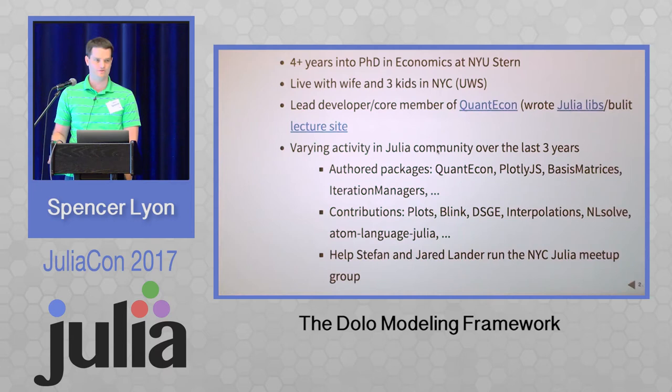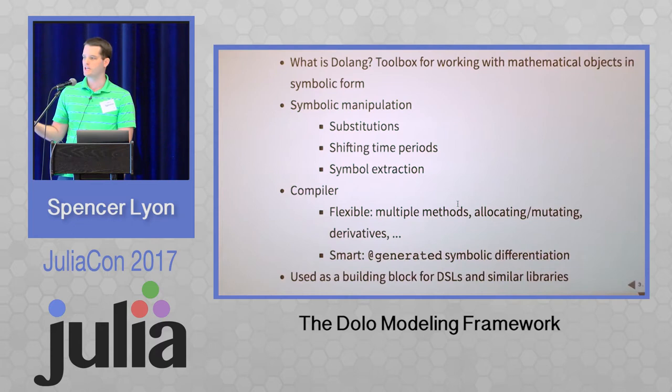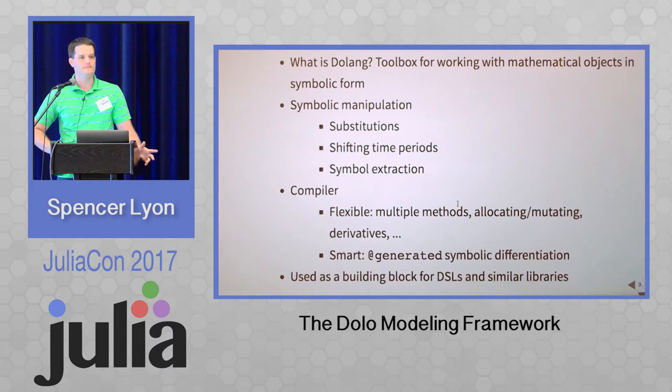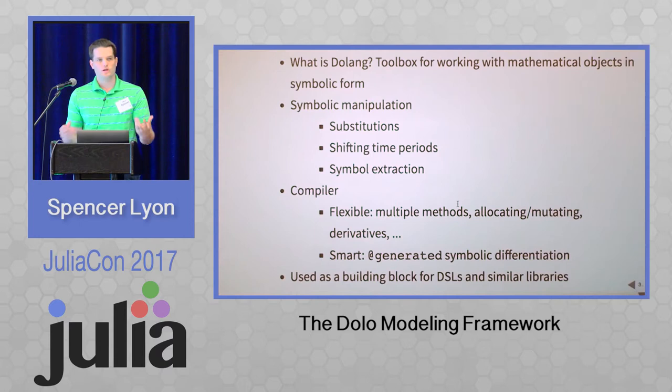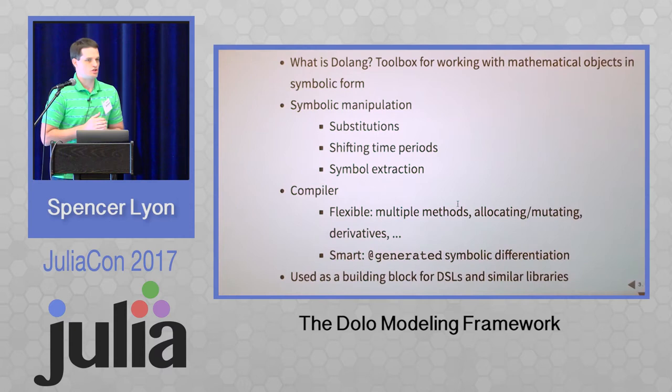Let's jump into the first package: DoLang. I describe it as a toolbox for working with mathematical objects in symbolic form. It's split into two main components. First, a set of underlying functions that manipulate mathematical expressions — things like substituting out a particular subexpression for something else, shifting variables to different time periods throughout the expression, and extracting lists of what symbols appear in equations, at what times, in which equations, and in what order.